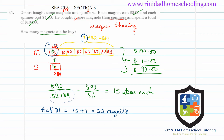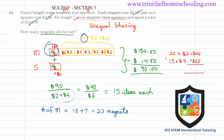As with every question, it's good to do a quick back-check to make sure the answer makes sense. We find the cost of 22 magnets and 15 spinners and verify they total $104. 22 magnets at $2 each gives $44, and 15 spinners at $4 each gives $60. Adding these together: $44 plus $60 equals $104, which matches the amount he spent. Our answer is correct and we can move on to the next question.